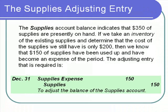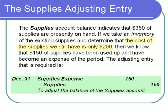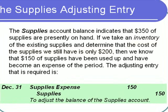The supplies account balance on our trial balance is $350. Normally, this balance represents what was in the account at the beginning of the period plus any purchases made during the period. If we take an inventory and determine that the cost of supplies we still have is only $200, then we know that $150 of supplies have been used up and have become an expense of the period. The adjusting entry is to credit supplies for $150 and debit supplies expense for $150.